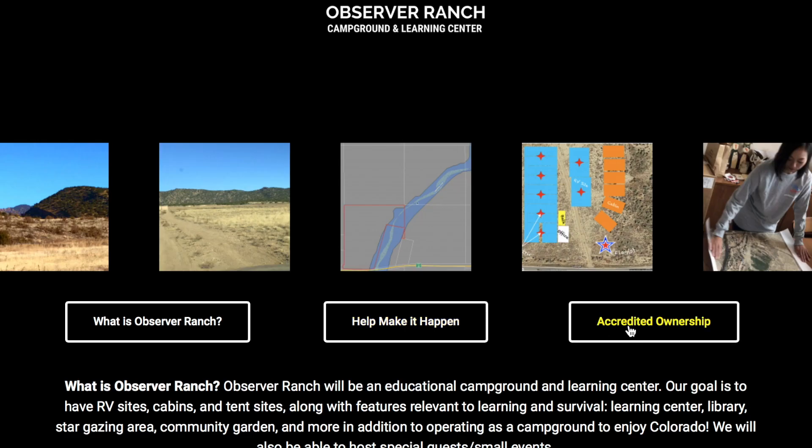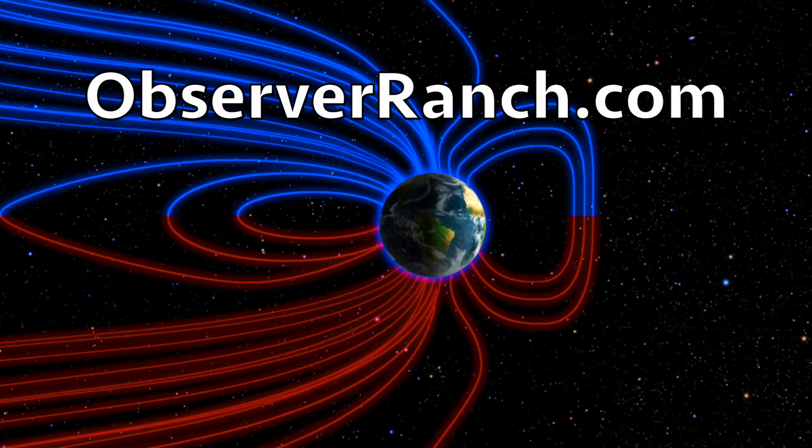The deadline for the first lottery and visitation is February 4th. Follow the directions on observerranch.com, the accredited button there. It takes about two to four days to get through that process. We greatly appreciate your support.